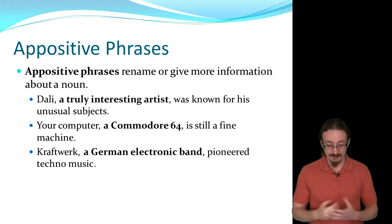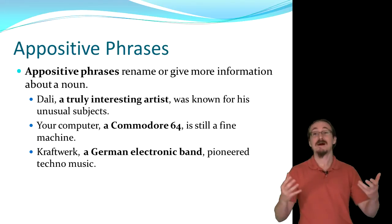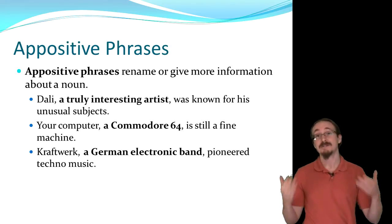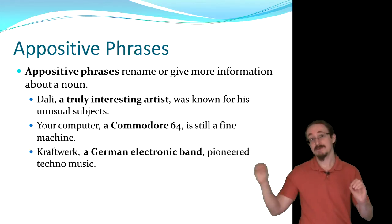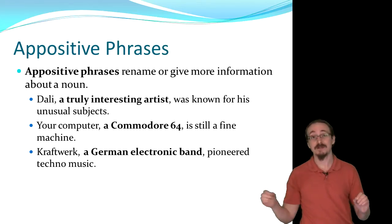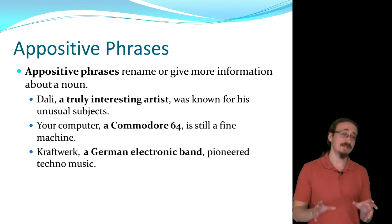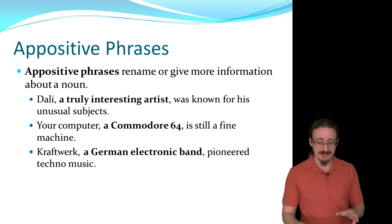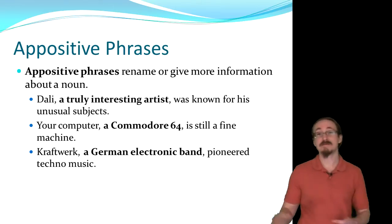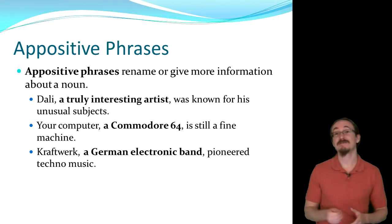'Your computer, a Commodore 64, is still a fine machine.' 'Kraftwerk, a German electronic band, pioneered techno music.' Notice that all these examples with appositive phrases always have commas around them — one before, one after — so the reader doesn't get confused. Also be aware you don't want to make these too long. If you've got 'Dolly, a truly interesting artist,' that's short enough that by the time you hit the verb you can still remember Dolly. Sometimes students make a mistake and have too long a phrase, and by the time you get to the verb, you've forgotten what the subject was. Keep them short.